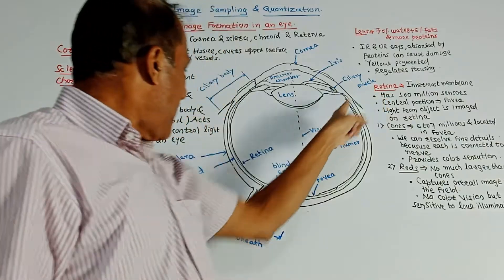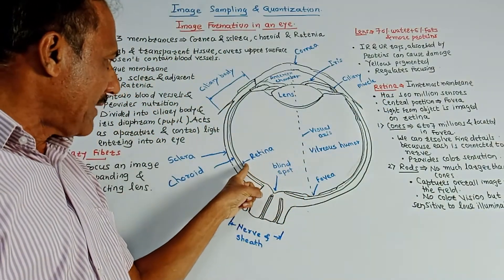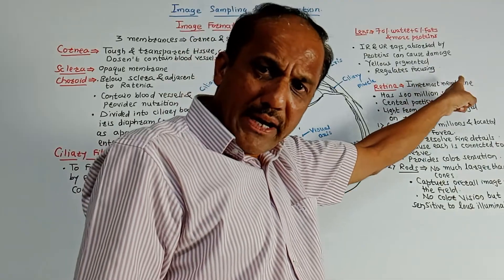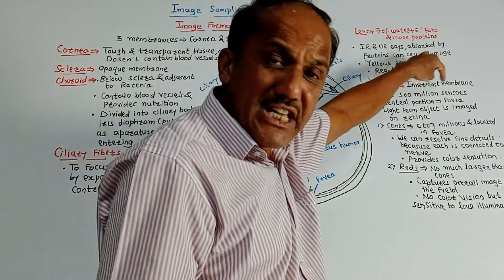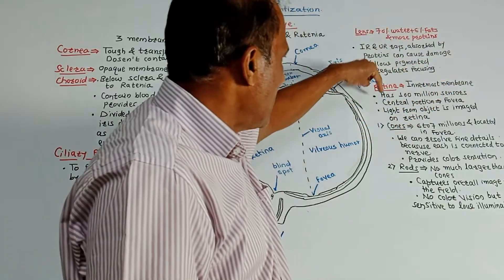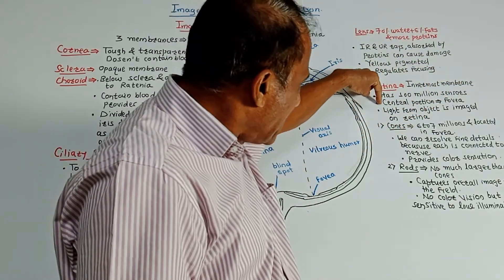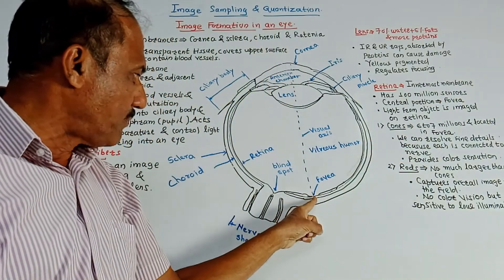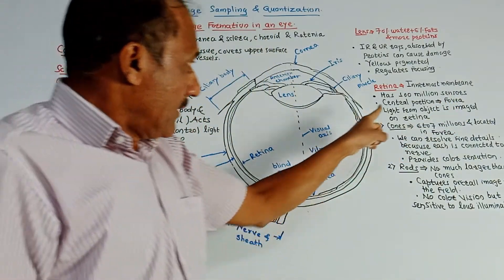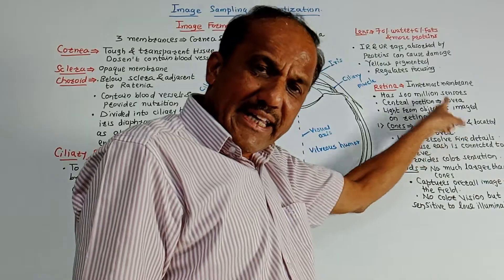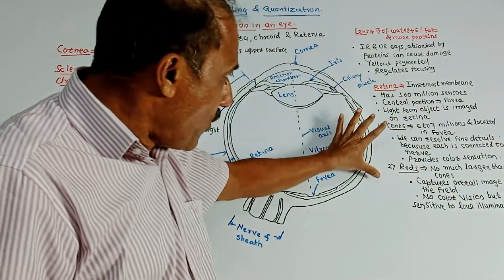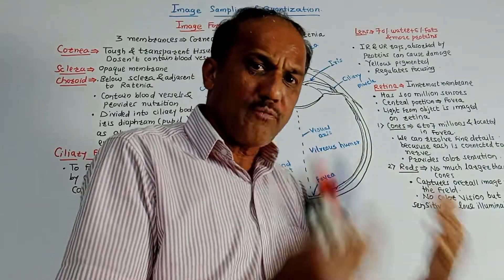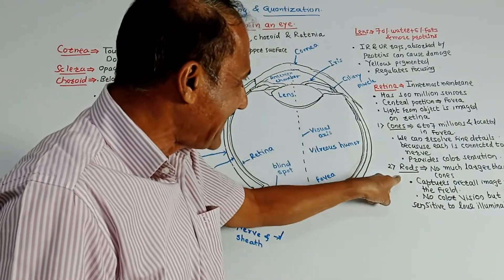The most important part is the retina. It is the innermost membrane of an eye and has 100 million sensors. In the central part of the retina, we have an area called the fovea. The light from an object is imaged on the retina. In the fovea, there are two major types of receptors: cones and rods.